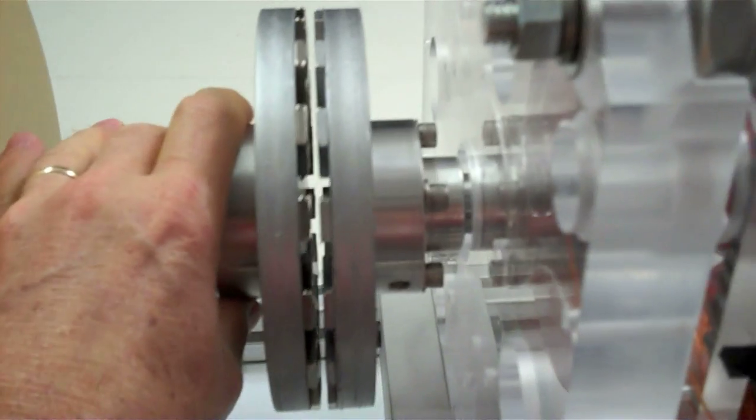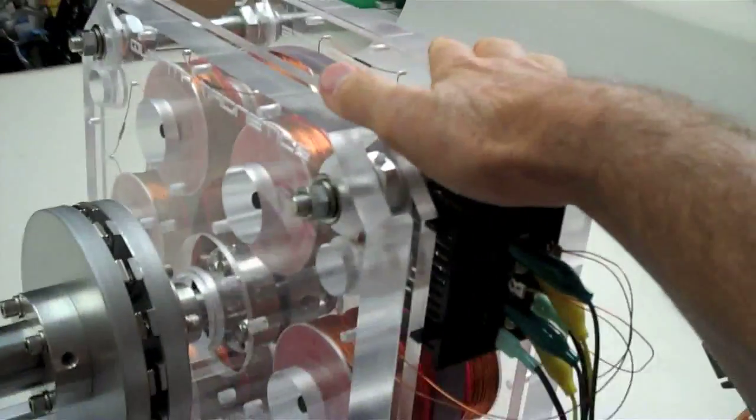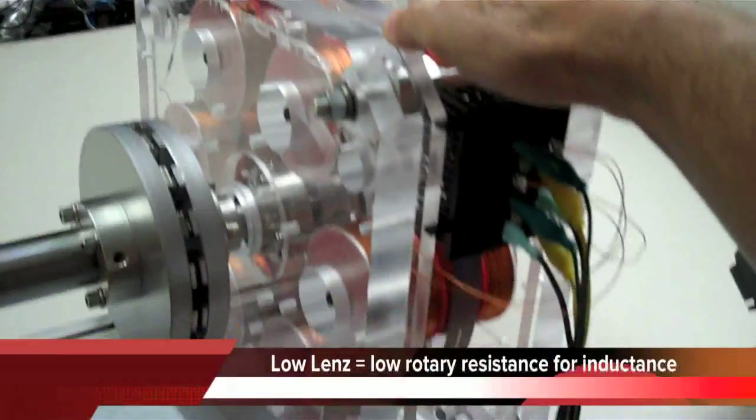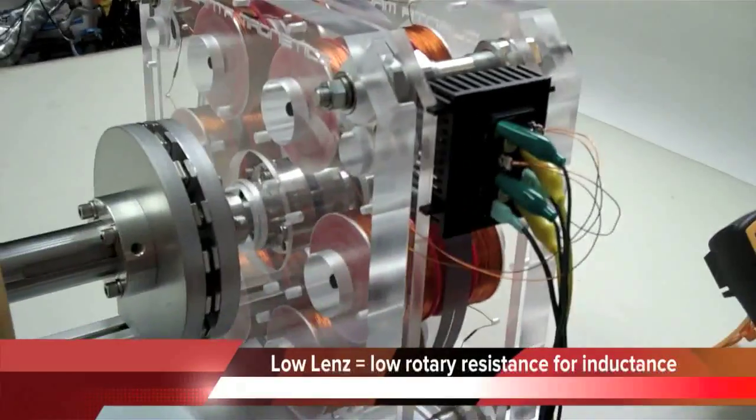It's about an eighth of an inch gap. It can be an eighth up to a quarter. It depends on the generator configuration. This particular kit generator right now is configured for a low lens operation.